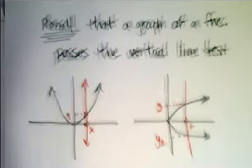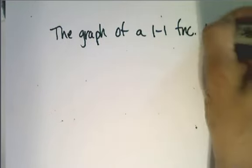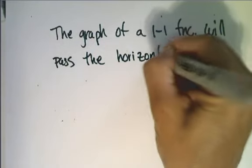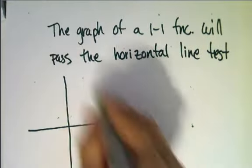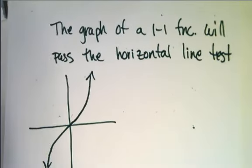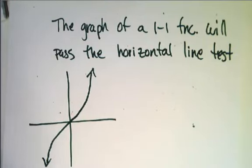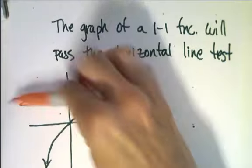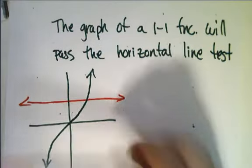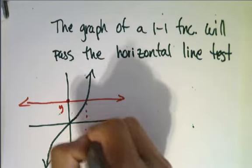We should also be able to tell graphically if a given function is one-to-one. The graph of a one-to-one function will pass the horizontal line test. For example, take a graph that is a function — any vertical line hits it in only one place. And if I take any horizontal line and draw it through the graph, it will also hit it in only one place. That is, for each y-value, there is exactly one x-value.